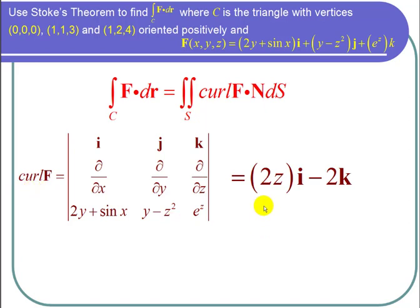So the curl of f is equal to 2zi minus 2k. So now let's find the equation of the plane that contains this triangle. And to do that, I need to find the normal vector for the plane.